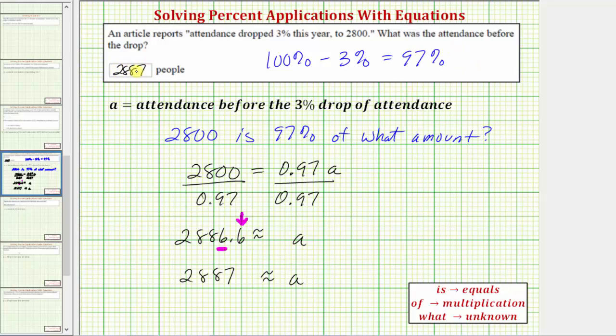Which means if the original attendance was 2,887 and it drops three percent, the attendance would be 2,800. I hope you found this helpful.